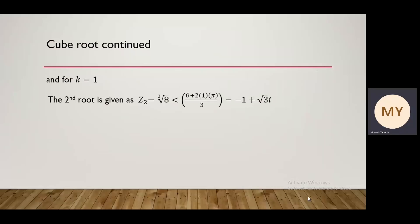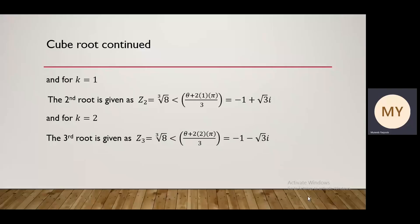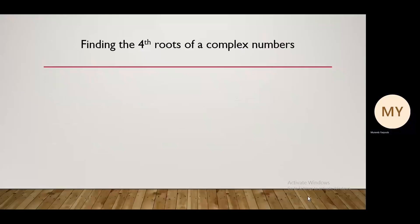For the second root k equals 1, z2 equals cube root of 8, argument (theta plus 2 pi) divided by 3, giving minus 1 plus root 3 i. For the third root k equals 2, z3 equals cube root of 8, argument (theta plus 4 pi) divided by 3, giving minus 1 minus root 3 i. So these are the three cube roots of the given complex number.